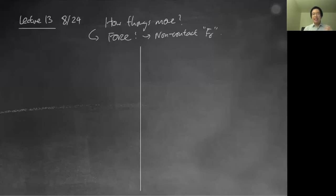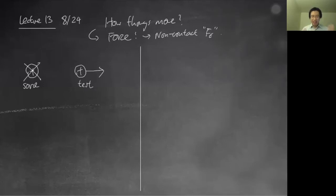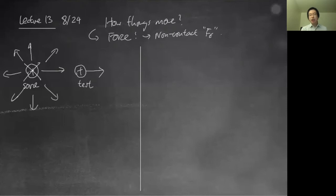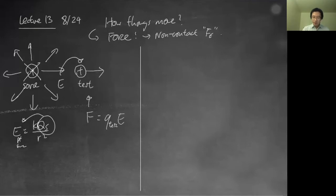The conceptual takeaway — maybe I should say two lines — is we're trying to answer how things move and we're introducing a new non-contact force. Things move due to forces, and we have a new non-contact force called electric force. If I put a positive charge here and a positive charge here, why does this one move away from that one? Assuming this is the source — nailed down so it doesn't move — the source emits an electric field. It's a two-step process: the field is what applies a force on the test charge.